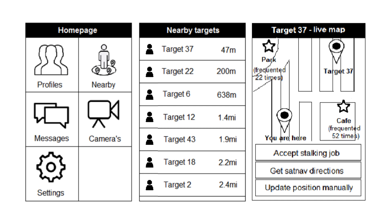The home page of the app contains profiles for each target, a list of nearby targets, a messaging system for the surveillance team members to communicate with each other, and live camera feeds — for example, the front and back camera on the surveillance vehicle.